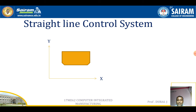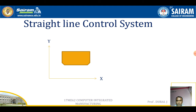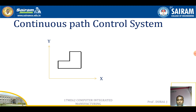In the straight line control system, the tool moves along a straight line — either horizontal, vertical, or inclined. These two movements — point-to-point and straight line — are mainly used for milling operations, specifically for manufacturing keyway cuttings and producing slots.